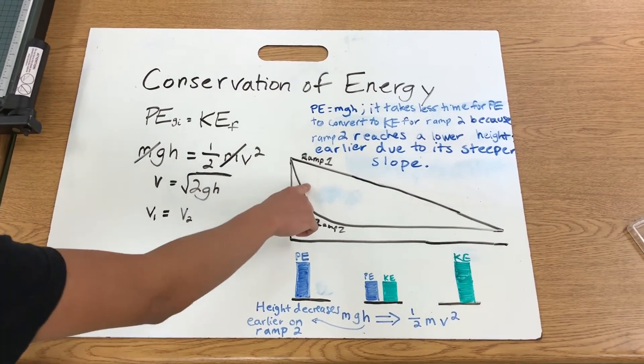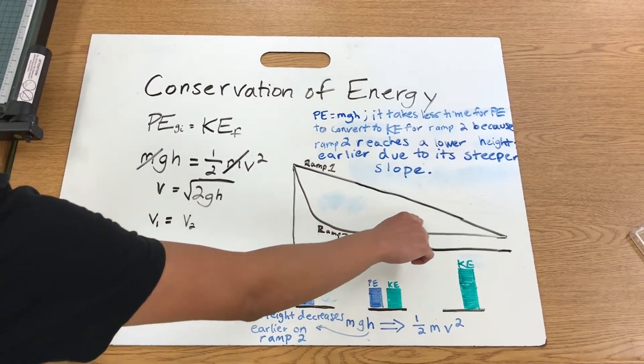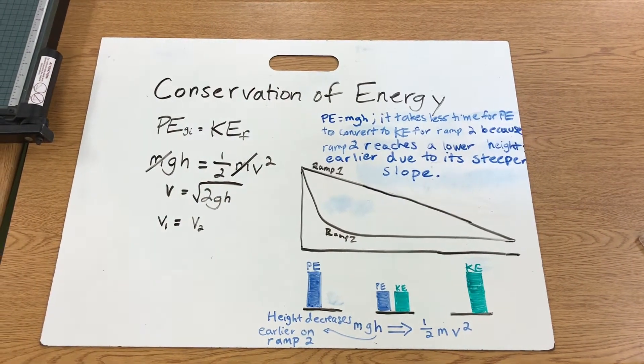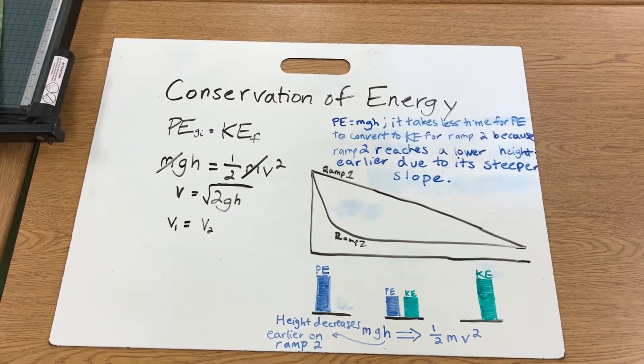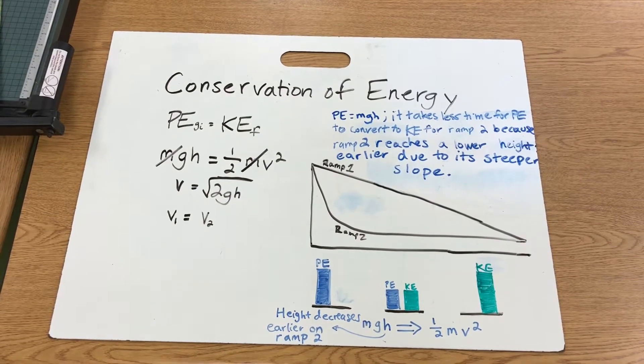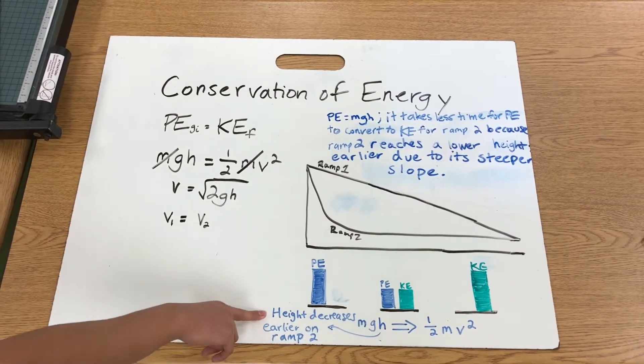Note that ramp 2 is consistently at a lower elevation than ramp 1. This means that the potential energy on ramp 2 is being converted to kinetic energy earlier because the height decreases in less time.